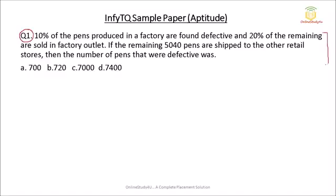Let us start with question number 1. This problem is from the topic percentage. So 10% of the pens produced in a factory are found defective and 20% of the remaining are sold in the factory outlet. So suppose in the factory there were total 100 pens. You are free to assume any value — 200, 400, 500, 1000.